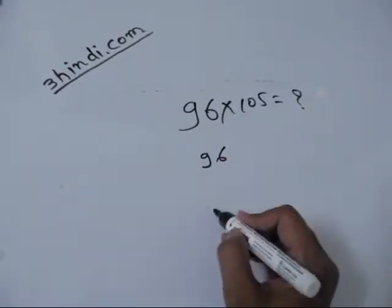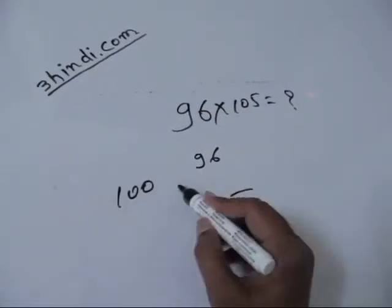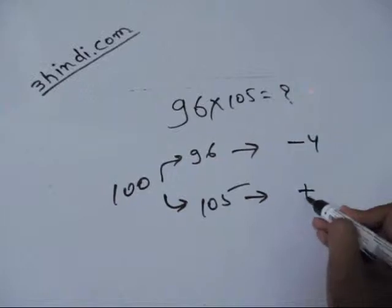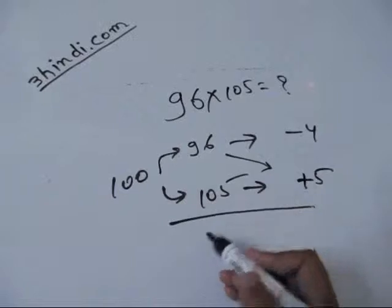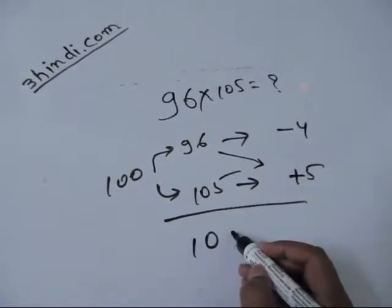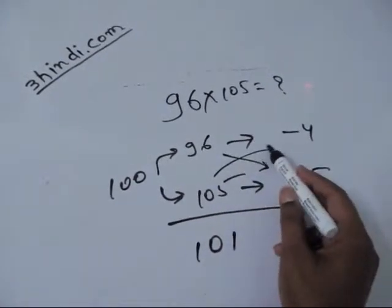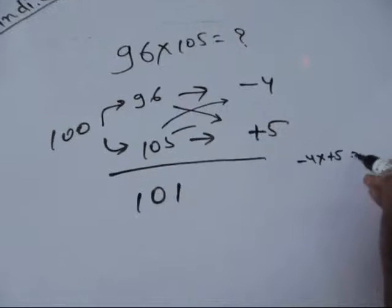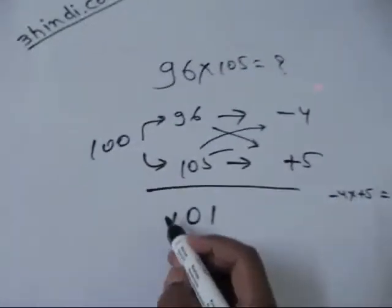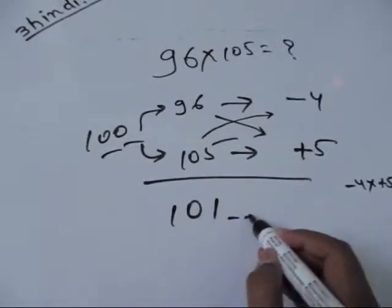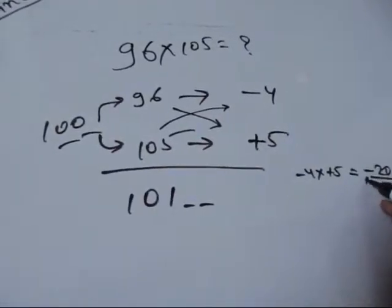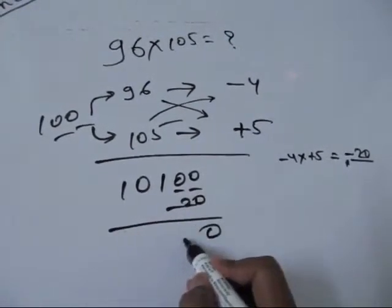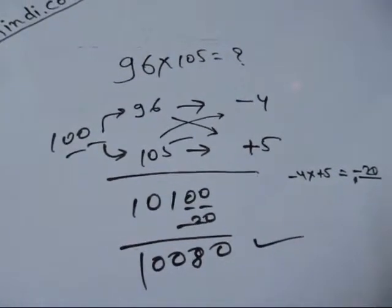Now multiply ninety-six and 105 with fast multiplication. The first is ninety-six, the second is 105. Base is hundred. How much away from hundred? Minus four. How much away from hundred? Plus five. First step: add the corners — ninety-six plus five equals 101. And multiply the second: minus four into plus five is minus twenty. Because this is minus, put two zeros at the vacant places. Then deduct twenty from 10100. It will come as 10080. This is the answer.